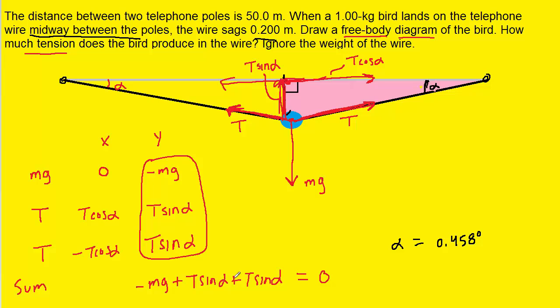We can combine the like terms of T sine alpha, T sine alpha to make two T sine alpha. We could then add mg to both sides of the equation so that it will cancel out on the left hand side. If we come up here, we can see that two T times the sine of alpha is going to equal mg.